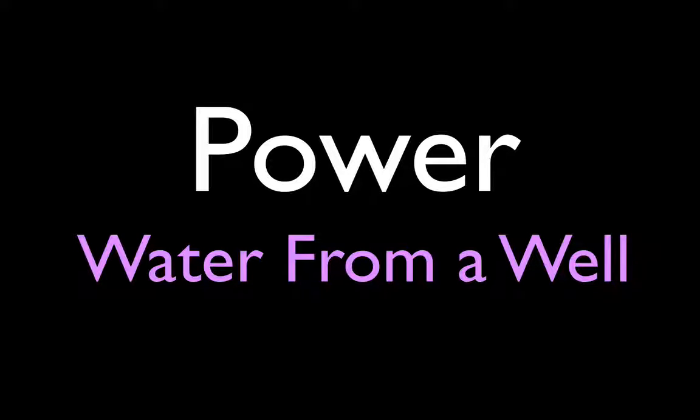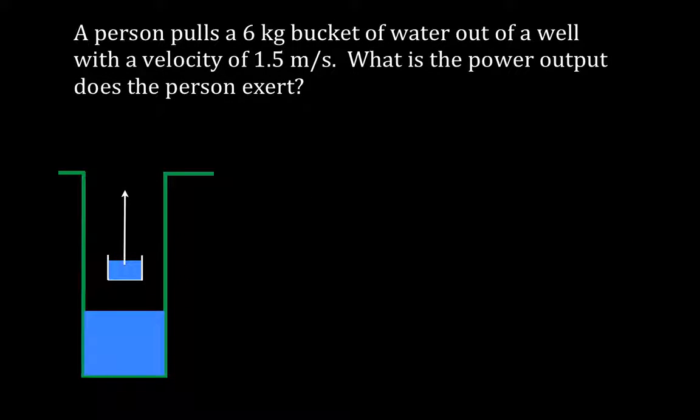In today's video, we're going to calculate the power output of a person as they lift a bucket of water out of a well. And this is the situation we have. Here's the well, here's the bucket of water, and the person pulls a 6 kilogram bucket of water out of a well with a constant velocity of 1.5 meters per second, and we want to know what is the power output of the person.